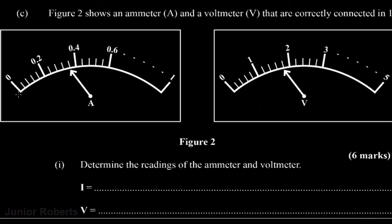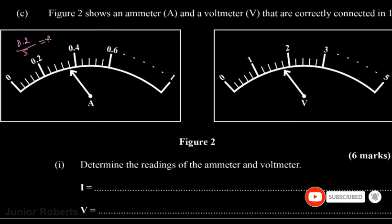If we look at the scale of our ammeter, we see zero, 0.2, 0.4, and 0.6 with some in-between values. To determine the value of each in-between division, we consider from 0 to 0.2 — there are five divisions. So we divide 0.2 by 5 and get 0.04 amperes. Therefore each small line on the ammeter measures 0.04 amperes.